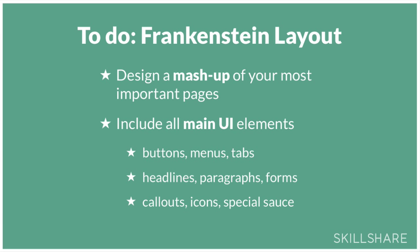Okay, so now we're going to design our Frankenstein layout. You're going to design a mash-up of your most important pages so you start addressing all the elements. In Sketch or Illustrator, you can start with your desktop artboard if you want to tackle the most complex layout, or your mobile artboard if you want the most constraints. Make a mock-up of your most important elements for your site: buttons, menus, tabs, headlines, paragraphs, call-outs — anything that's going to give you the best idea of how all those pieces are going to go together.